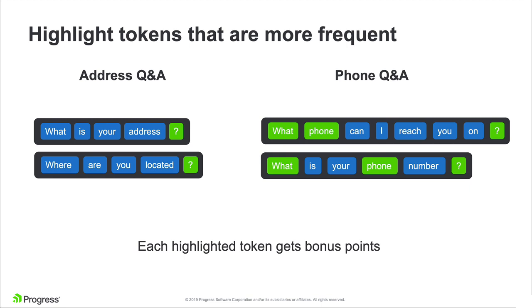Highlighted tokens are the tokens that are of a bigger value. If somebody asks a question that includes the word 'what' and 'phone', then automatically NLP will know that those are really important words and it is more likely that we are asking about phone than anything else. While words like 'reach' or 'number' are still important to the phone Q&A, they are not as important as 'what' and 'phone'.